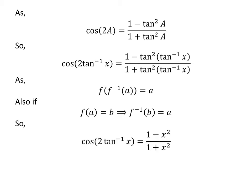As arctangent is the inverse of tangent, tangent of arctangent of x is equal to x. So cosine of 2 arctangent of x is equal to 1 minus square of x upon 1 plus square of x.